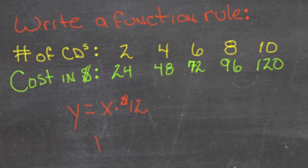Our function, y equals 12x, describes the cost output, y, based on the number of CDs purchased, which is the input, x.